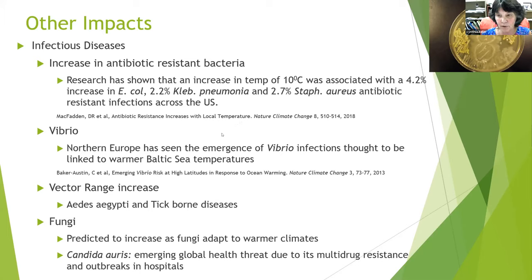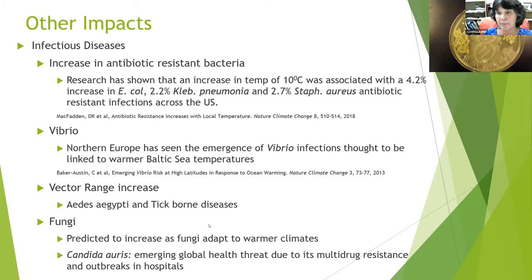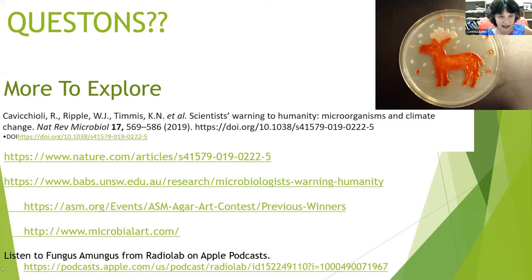Vector range will increase — Aedes aegypti, which carries dengue fever, Zika, et cetera, can spread into areas where it normally wouldn't survive, and certainly tick-borne diseases will spread as well. There's also an emerging fungal pathogen that is a global health threat in hospitals. Fungi are predicted to adapt to warmer climates, so we're going to see more fungal infections. There's an interesting podcast about human evolution — mammals are resistant to fungal infections — and the rise of fungal infections due to our body temperature. These are some more articles about bacteria and global warming, and here are a couple of links for agar art if you want to explore more.